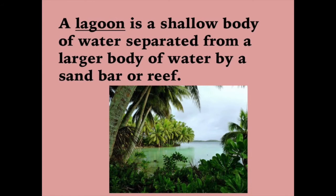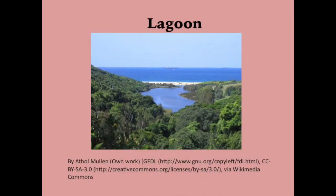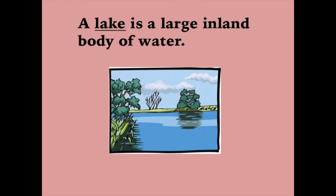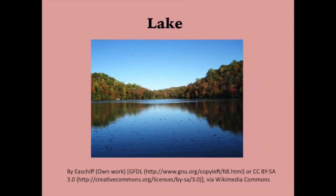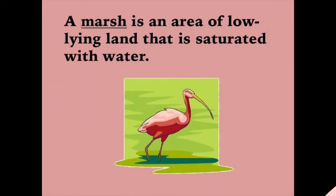A lagoon is a shallow body of water separated from a larger body of water by a sandbar or reef. A lake is a large inland body of water. A marsh is an area of low-lying land that is saturated with water.